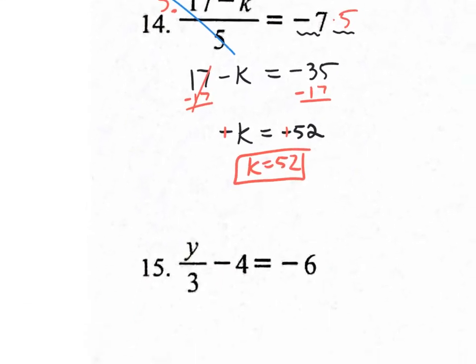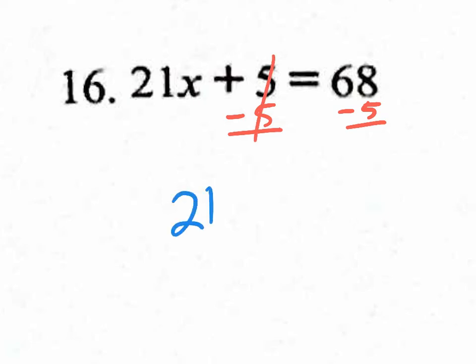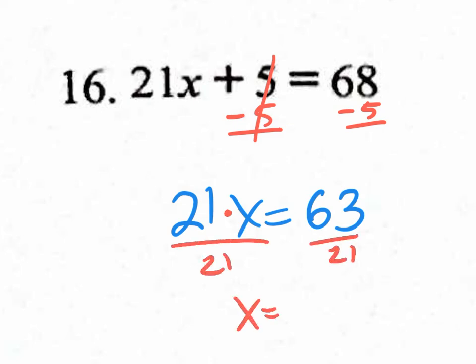Number 16, no fraction — even easier. Ivan, where's the X? It's on the left side. You don't want this 21 or the 5 — get rid of the plus 5 first by subtracting. What you do to one side you must do to the other; this cancels out and we have 21X equals 63. To get rid of the multiplication of 21, divide by 21. With a calculator, 63 divided by 21 gives a nice answer: 3. So X equals 3.